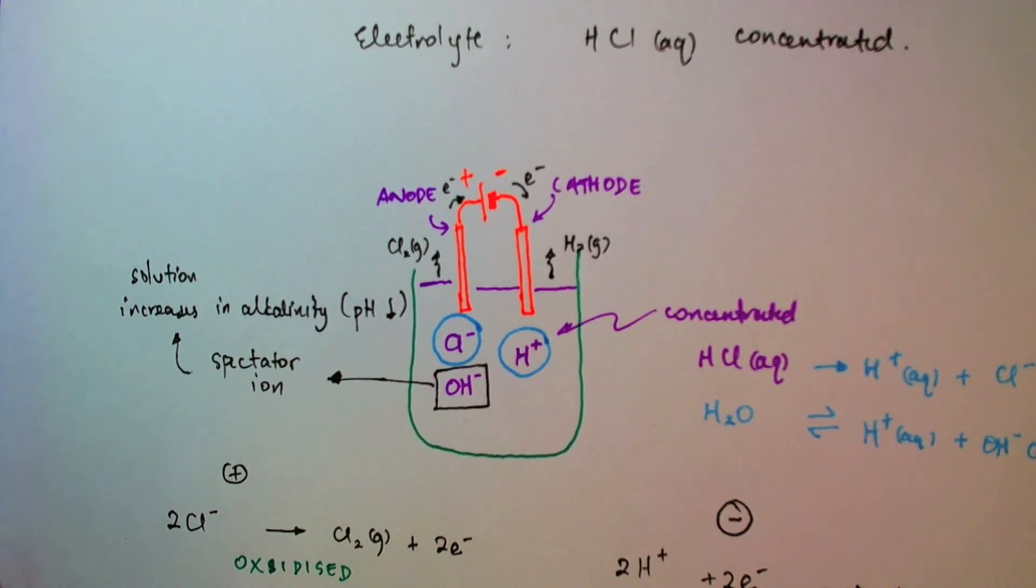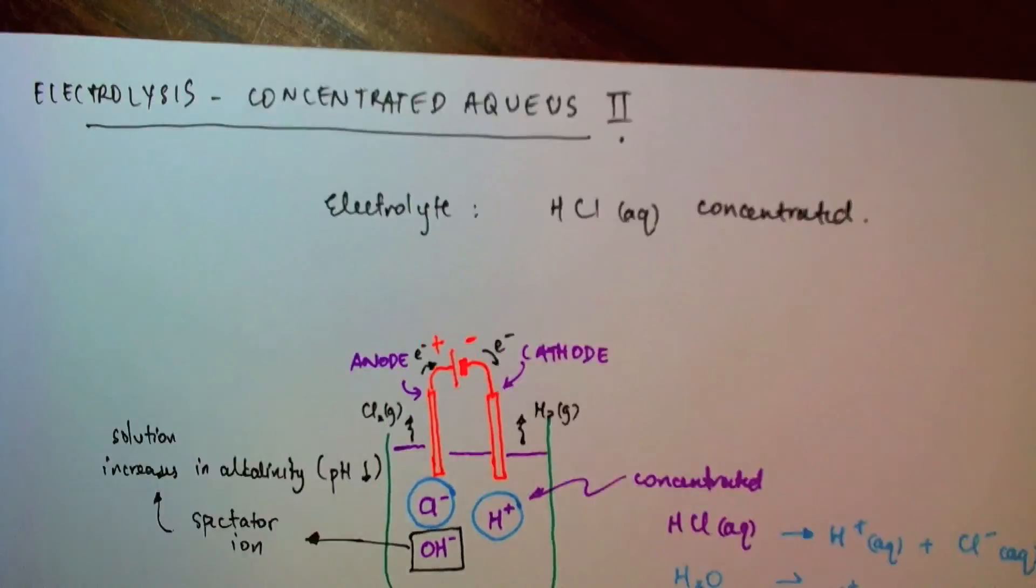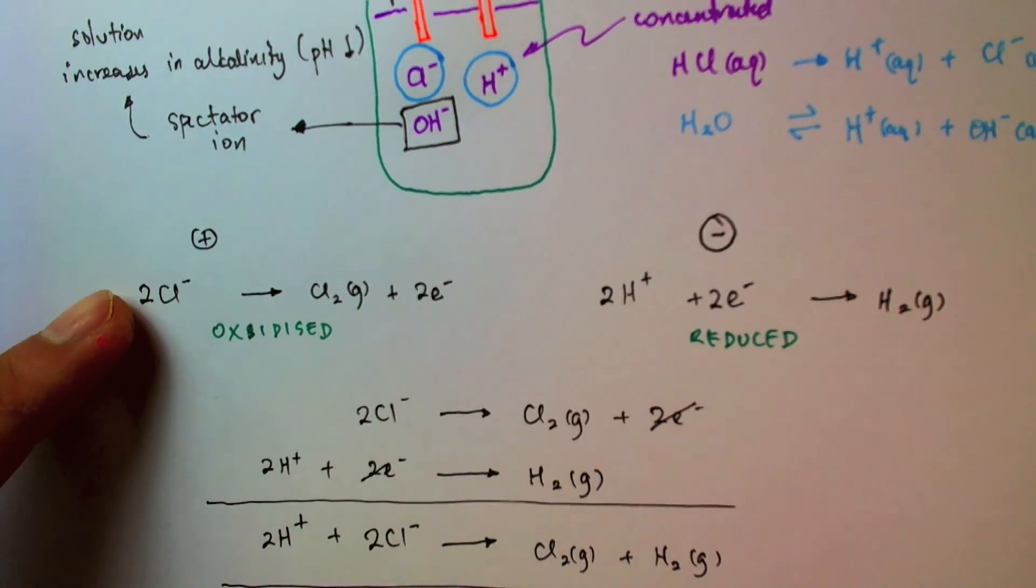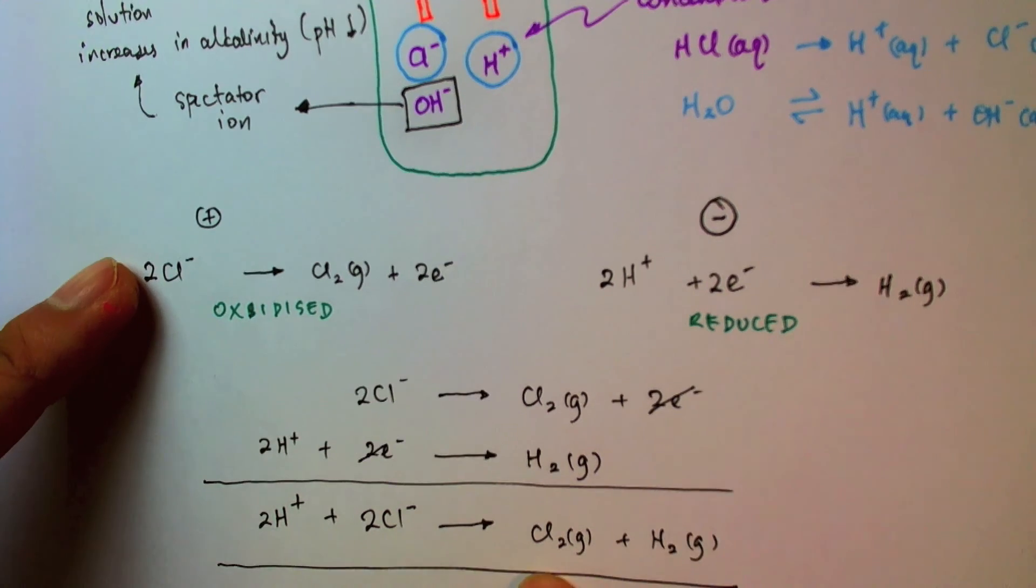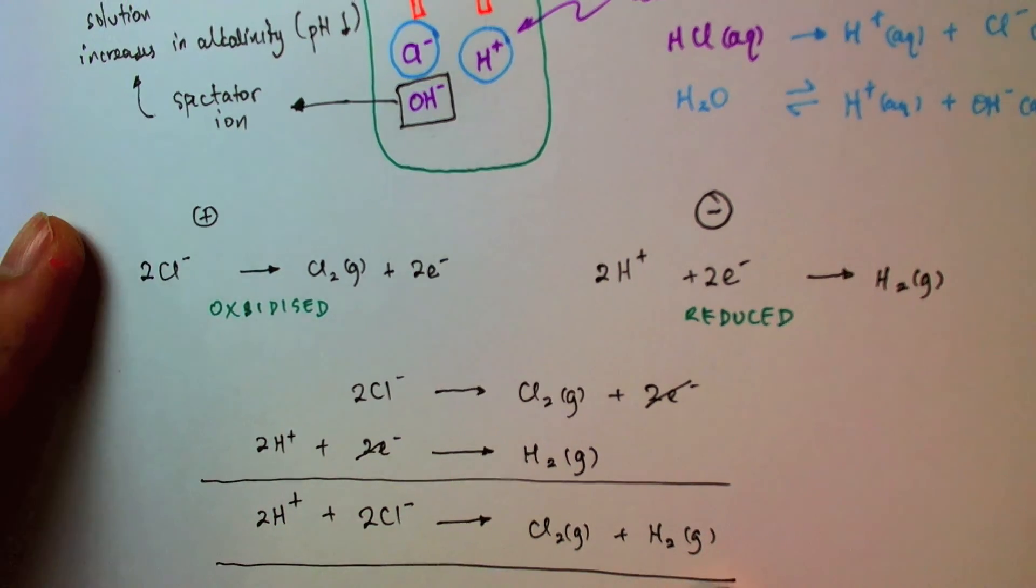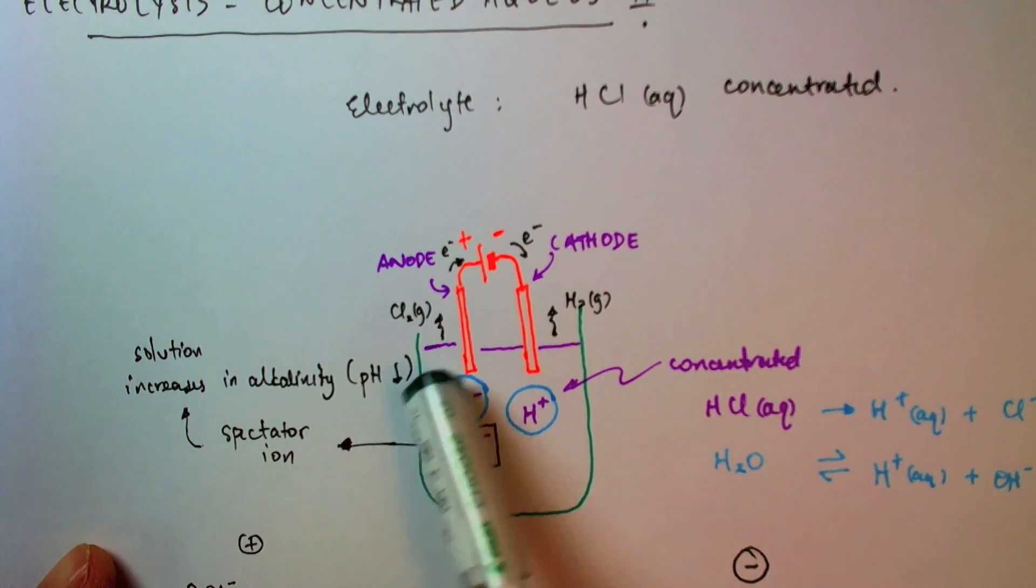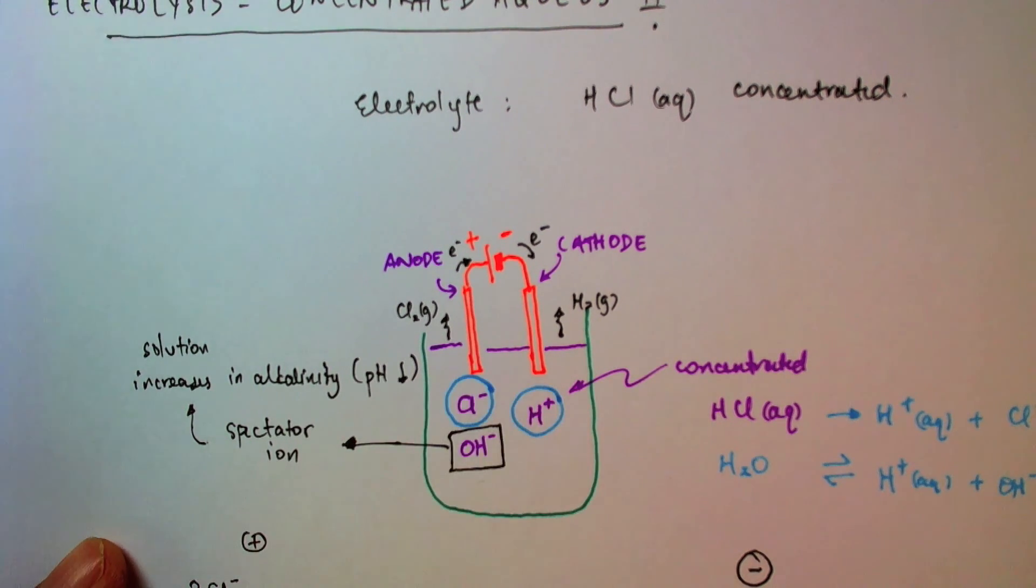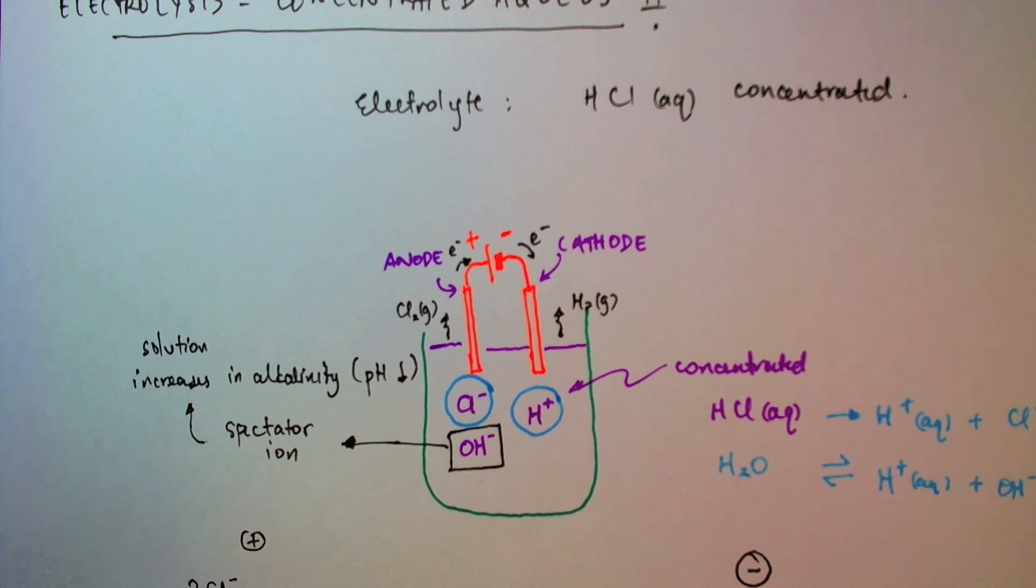So there we have it. The electrolysis of concentrated hydrochloric acid aqueous will give me chlorine at the anode, hydrogen at the cathode, and a solution that increases in alkalinity as the reaction proceeds. So in the next video, we'll look at how the products of electrolysis of a dilute aqueous solution.